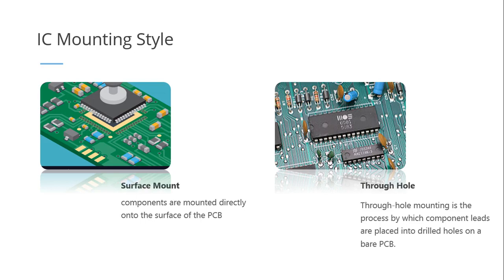If an IC needs to be integrated into a PCB by drilling holes and having the copper connections at the bottom or opposite side, we call this the through-hole mounting style. The solder is usually done on the opposite side. So: surface mount if it's on the surface without drilling holes, and through-hole if you need to drill holes on the PCB to mount the IC.